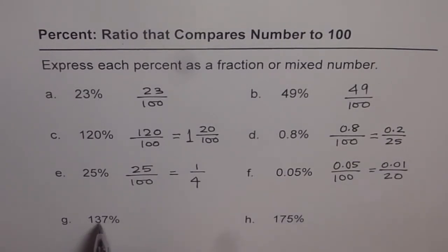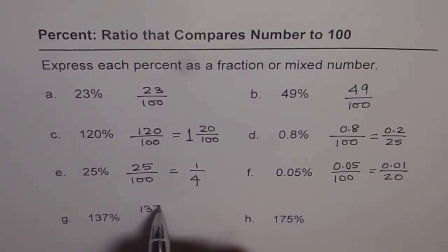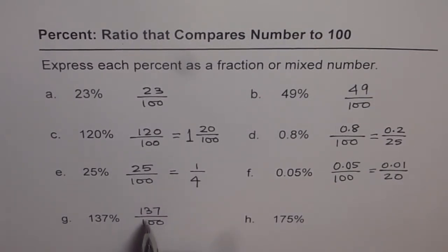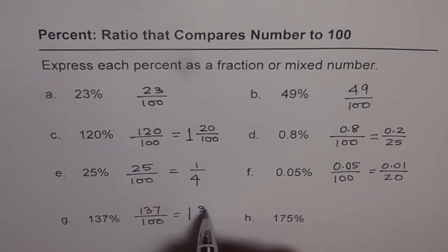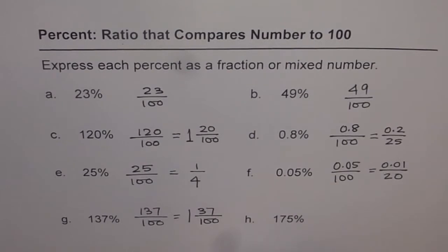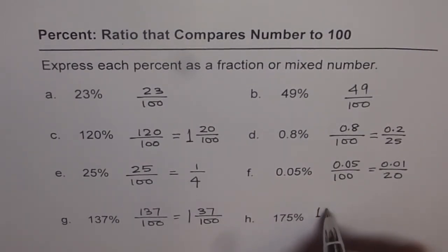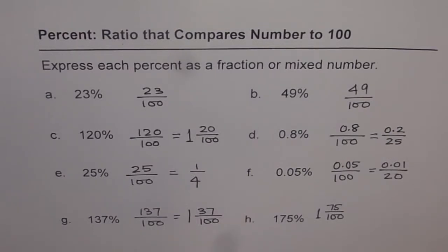On this, now this one, 137 percent, let's write this as 137 over 100. Now, this is also an improper fraction. We can write this as 1 and 37 over 100. 175 percent, 100 plus 75. So 100 is like one whole and then we get 75 over 100.